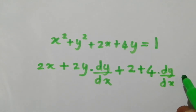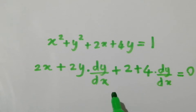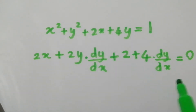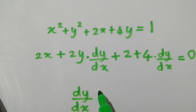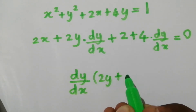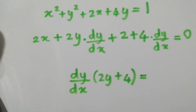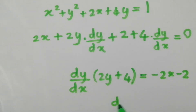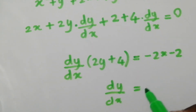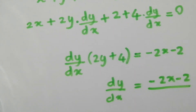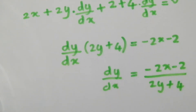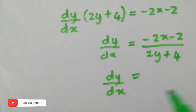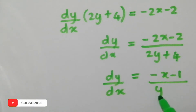This equals the derivative of 1, which is a constant, therefore it equals 0. Now I am going to make dy/dx the subject of this equation. I can take dy/dx as a common factor: dy/dx times (2y + 4) equals −2x − 2. Then dy/dx equals (−2x − 2) / (2y + 4). I can further simplify by dividing numerator and denominator by 2, giving dy/dx = (−x − 1) / (y + 2).